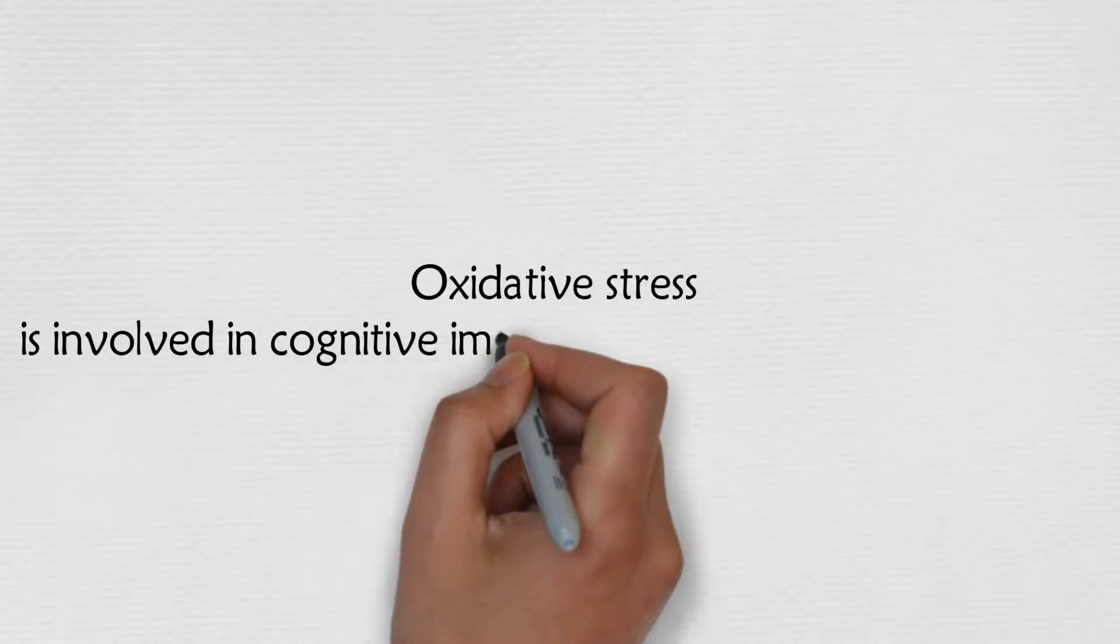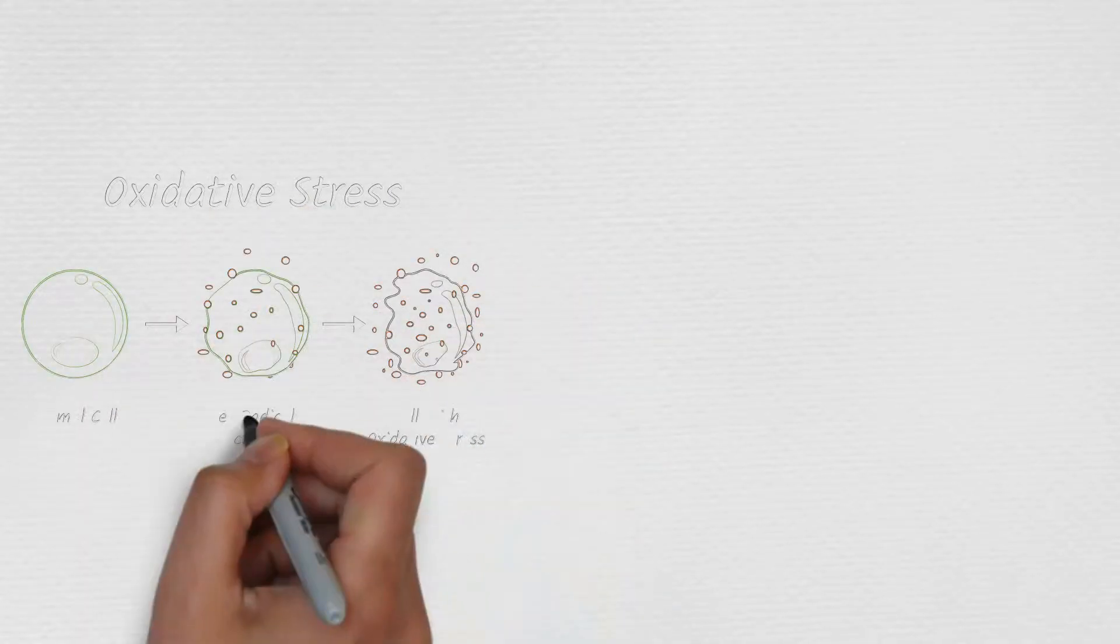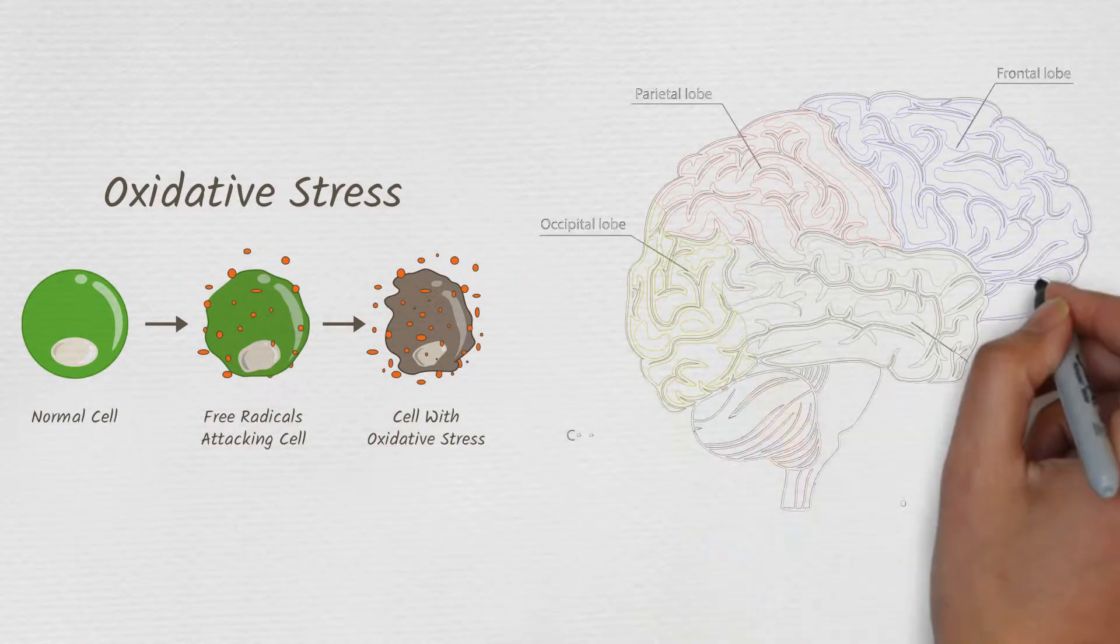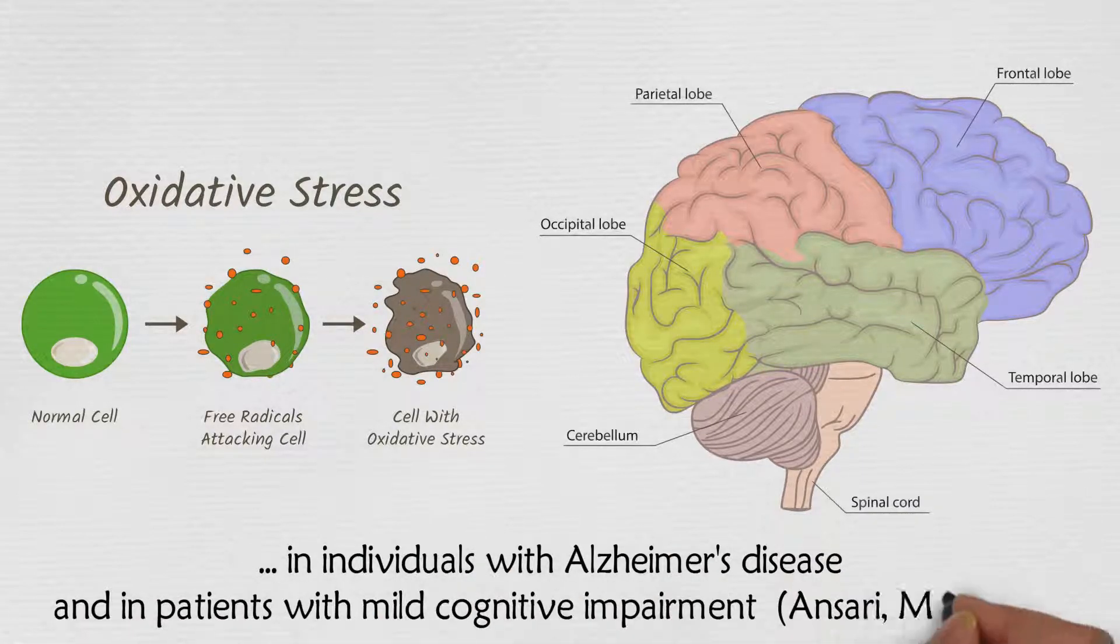Oxidative stress is involved in cognitive impairment and Alzheimer's disease. Increased oxidative stress has been documented in the frontal cortex in individuals with Alzheimer's disease and in patients with mild cognitive impairment.